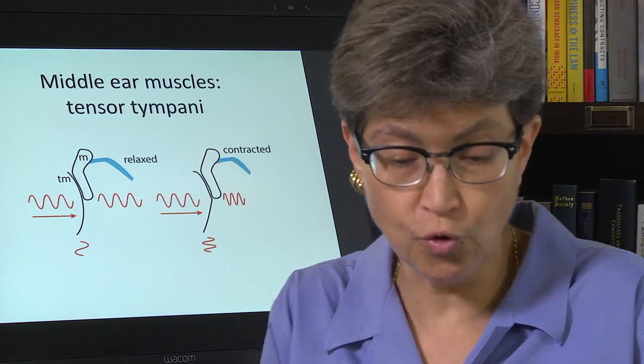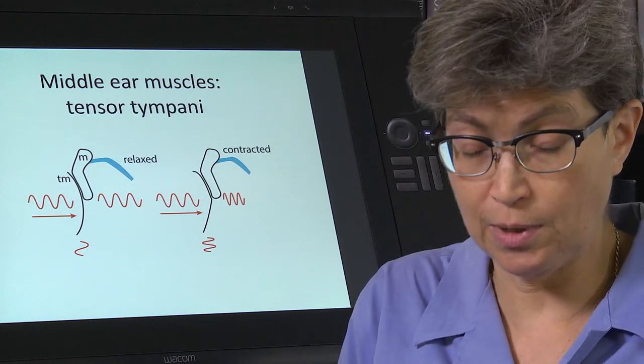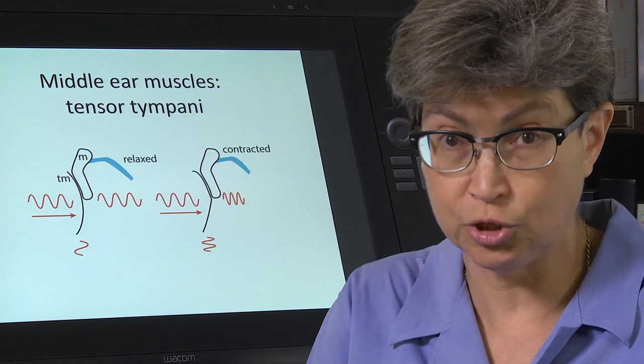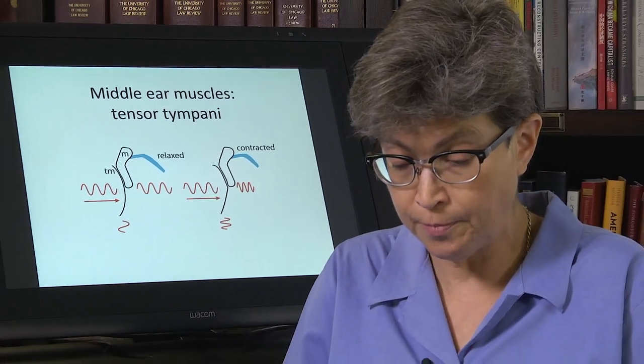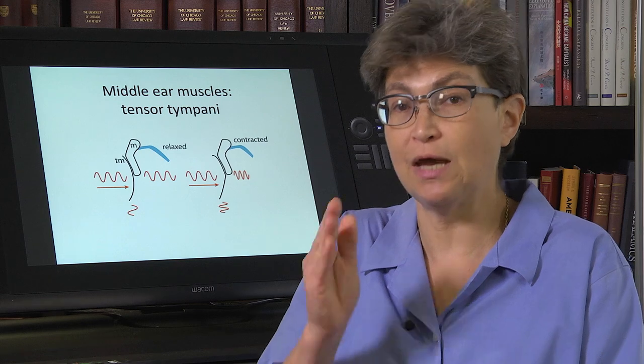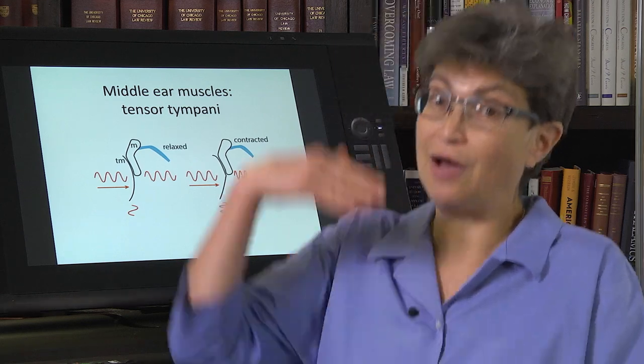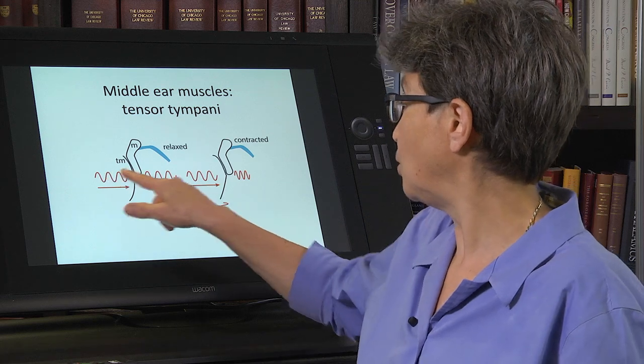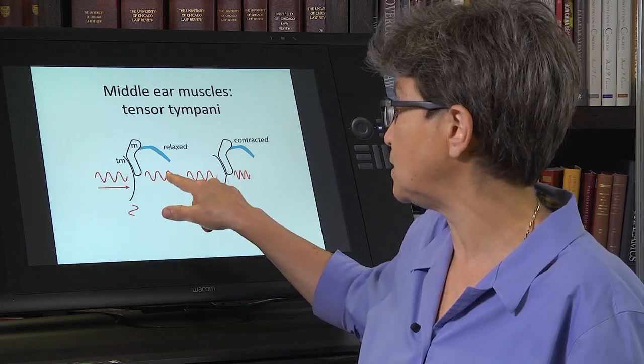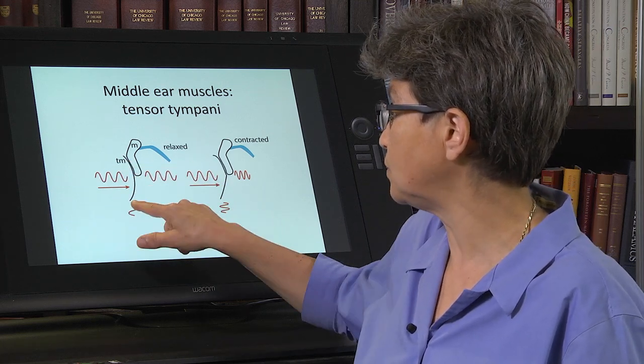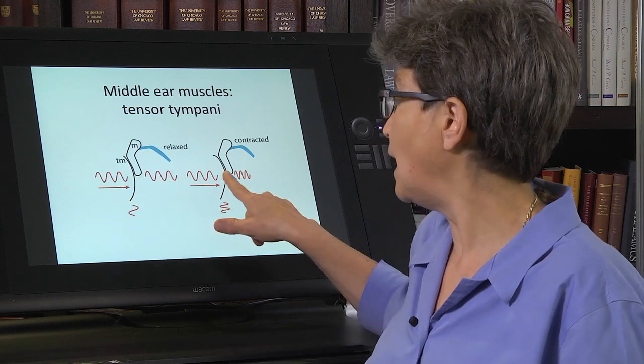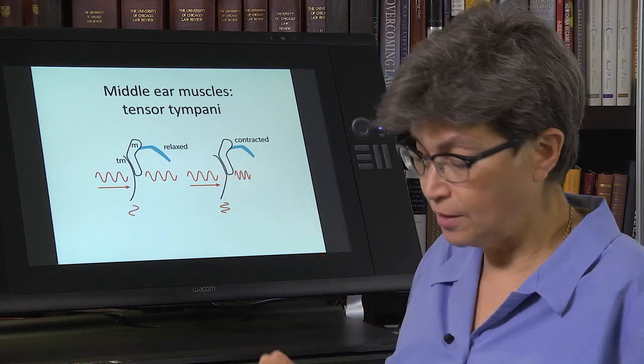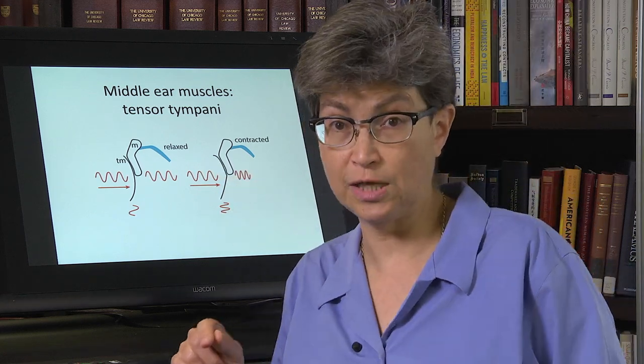And as we alluded to before, when you stretch the tympanic membrane, it's just the same as stretching a drum, tightening the drum, in which case the sound that you get from beating the drum now is at a higher frequency. So what you got before, the frequency out of the tympanic membrane was the same as the frequency in. And now when this is contracted, the frequency is higher than the incoming sound frequency.